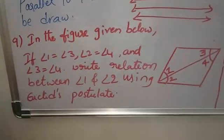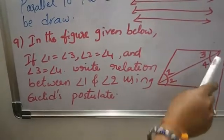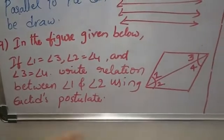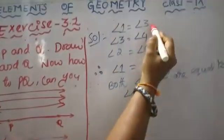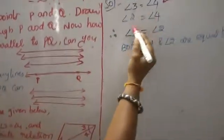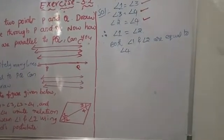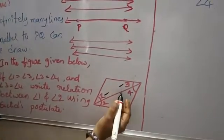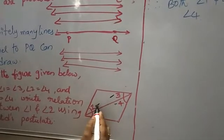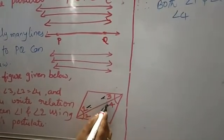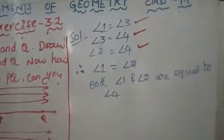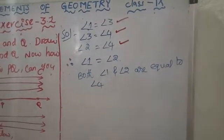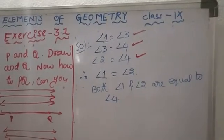Ninth question: from the adjacent figure, if angle 1 equals angle 3, angle 2 equals angle 4, and angle 3 equals angle 4, write the relation between angle 1 and angle 2 using Euclid's postulate. Given: angle 1 equals angle 3, and angle 3 equals angle 4, so angle 1 equals angle 4. Also angle 2 equals angle 4. Therefore angle 1 equals angle 2. The relation is angle 1 equals angle 2, and both equal angle 4.